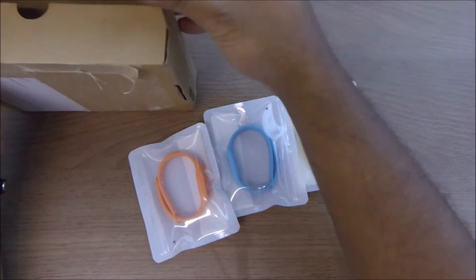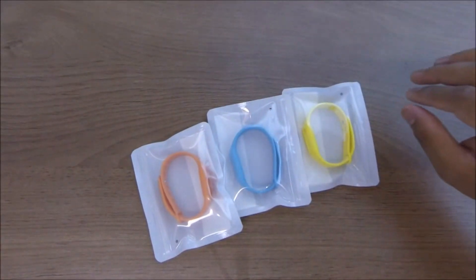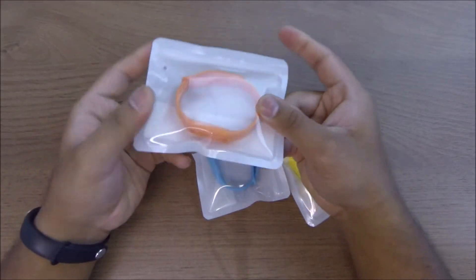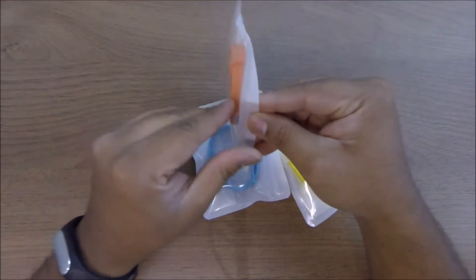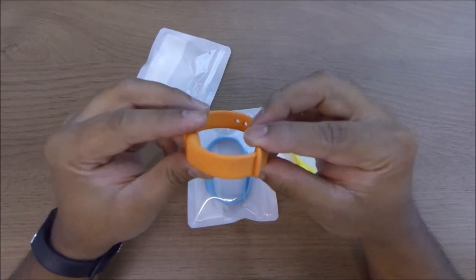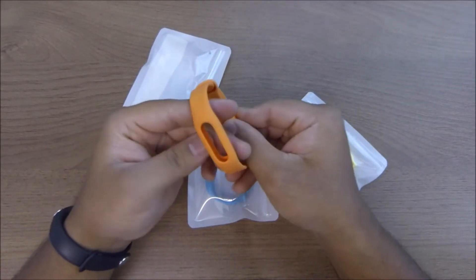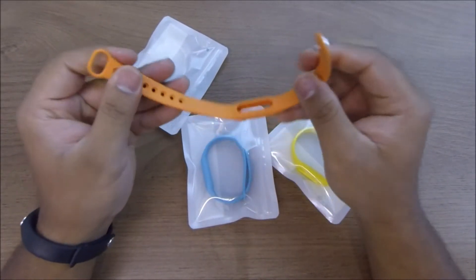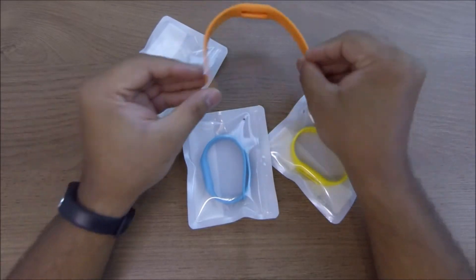Put the box aside, nothing else in the box. The Mi Band strap itself comes in pretty neat ziplock type of pocket and this looks pretty original. This is what you get.